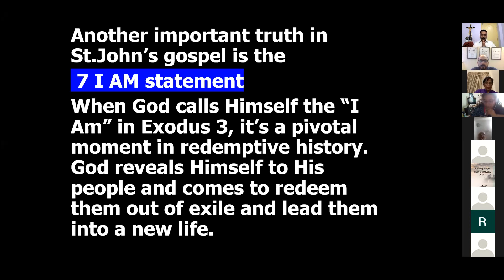God revealed himself to his people and came to redeem them out of exile and lead them to a new life. He appeared to Moses in Mount Horeb in that burning bush and told him 'I am who I am,' then commissioned Moses to lead the people of Israel out of slavery into a new life. Through the seven 'I am' statements, John is constantly trying to reveal that Jesus is the great I am.